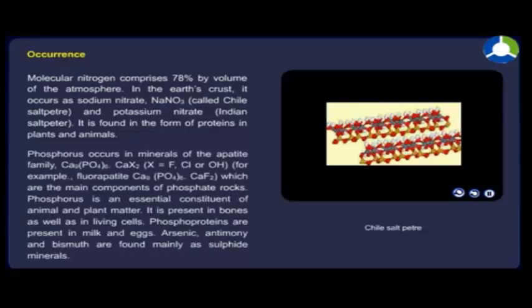Phosphorus occurs in minerals of the apatite family, which are the main components of phosphate rock. Phosphorus is an essential constituent of animal and plant matter. It is present in bones as well as in living cells. Phosphoproteins are present in milk and eggs.